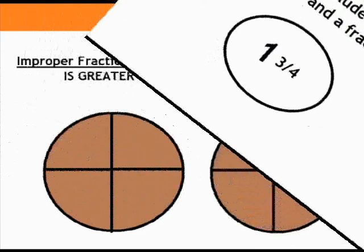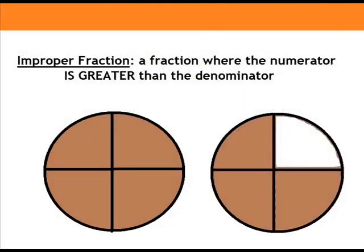Improper fraction. An improper fraction is a fraction where the numerator is greater than the denominator. For example, seven over four.